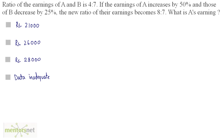If we consider A and B as their earnings, it is given that the ratio of A and B is 4 is to 7. So I can say that A is 4x and B is 7x, where x is a common factor of A and B.